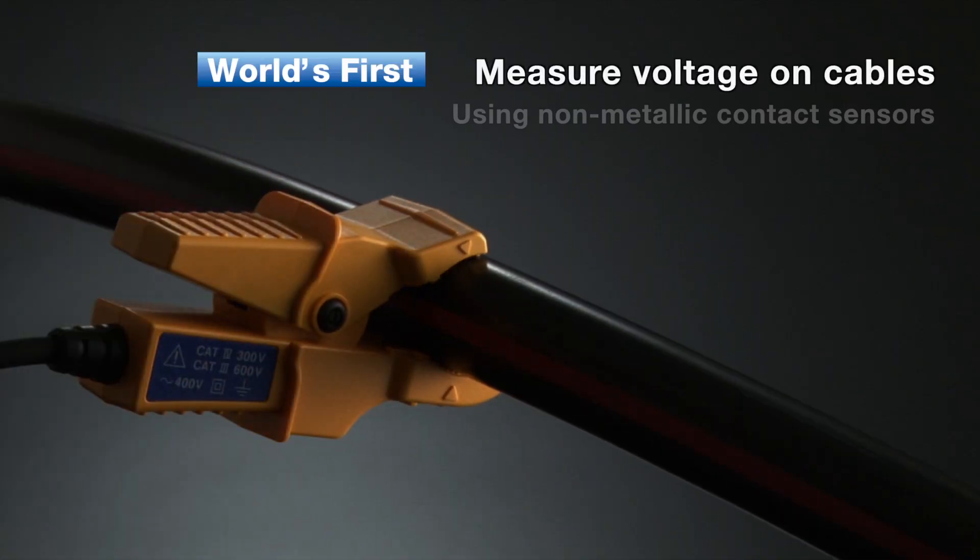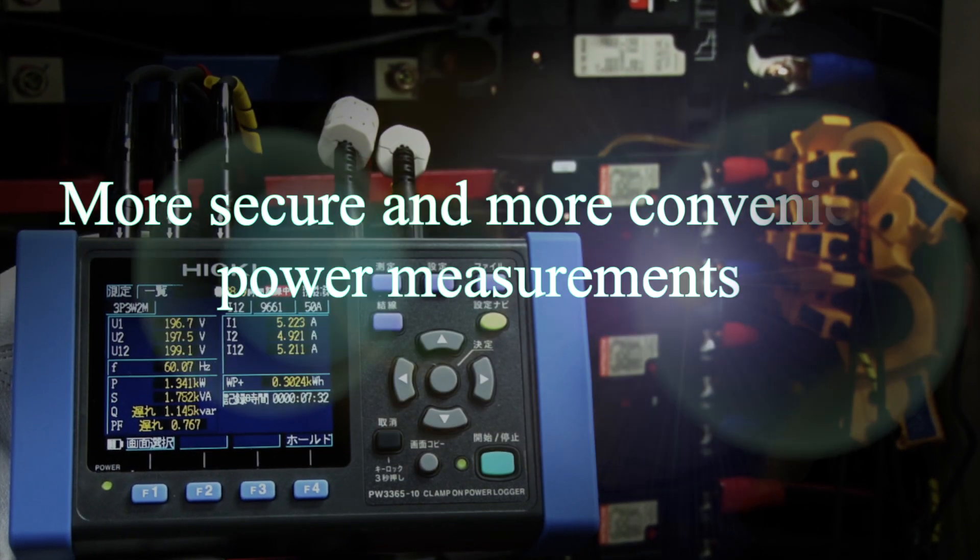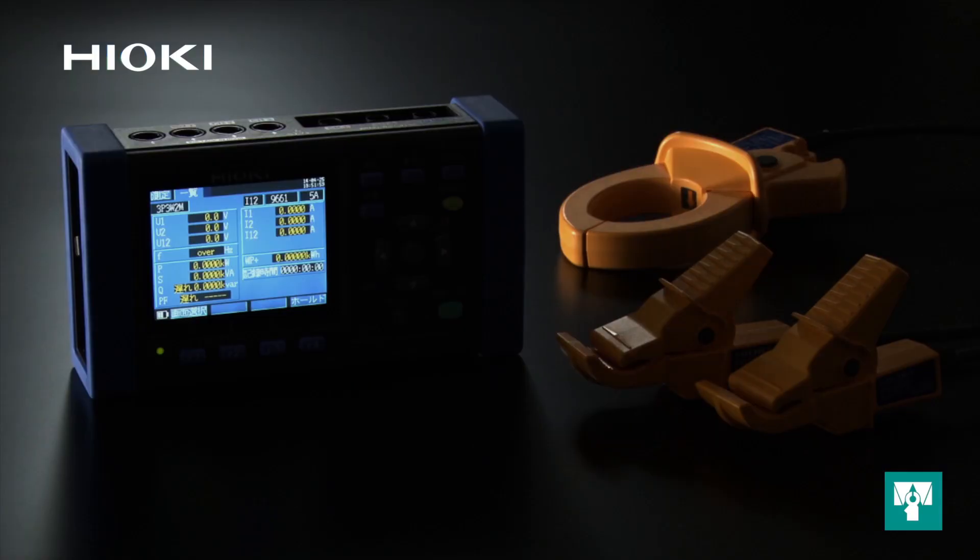How do we do this? By developing the world's first non-metallic contact sensor for voltage testing. Pair this with clamp-on current sensors and you now have access to a power measurement system that delivers more secure and more convenient power measurements.